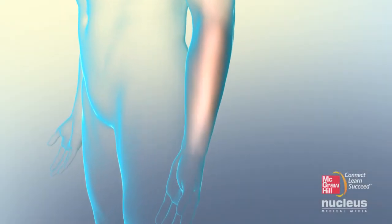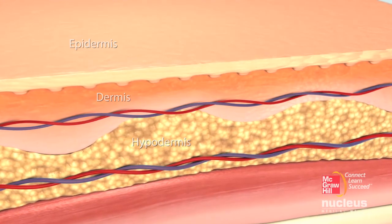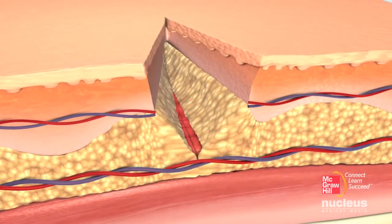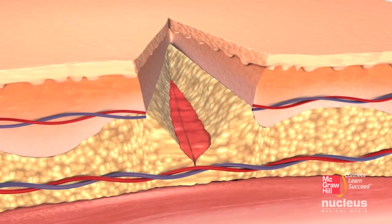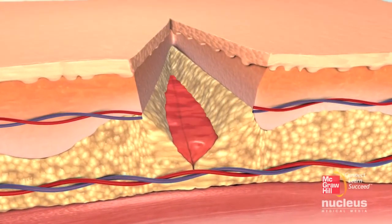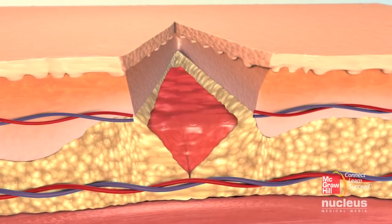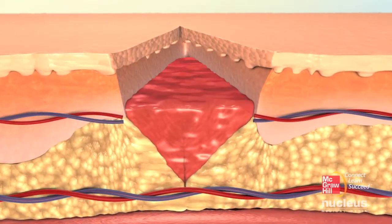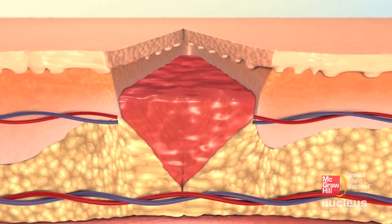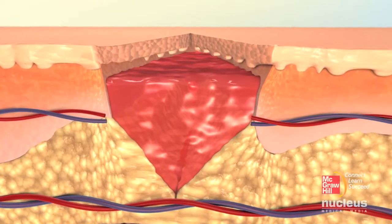An injury to the skin, such as a cut, scrape, or puncture wound, kills nearby cells and damages underlying structures and triggers the complex process of repairing the skin.